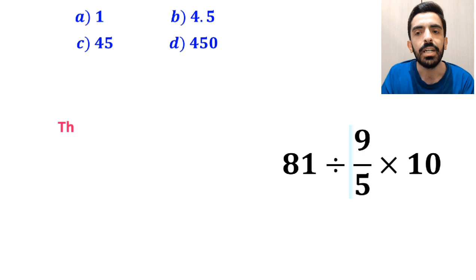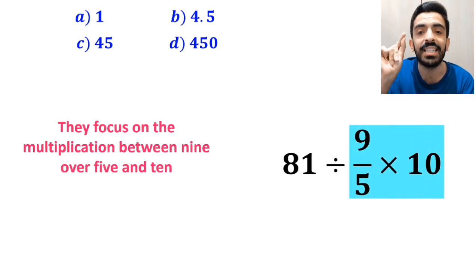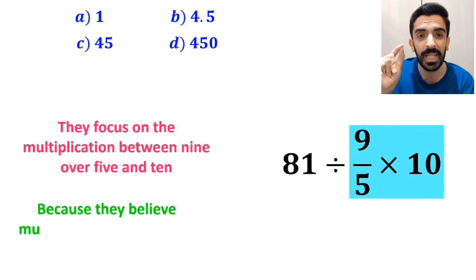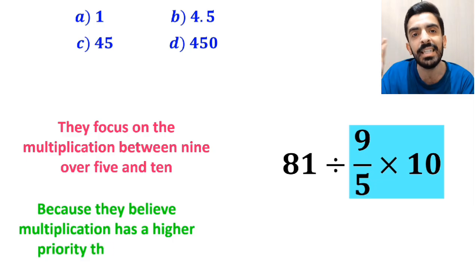In the next step, they focus on the multiplication between 9 over 5 and 10, because they believe multiplication has a higher priority than division.